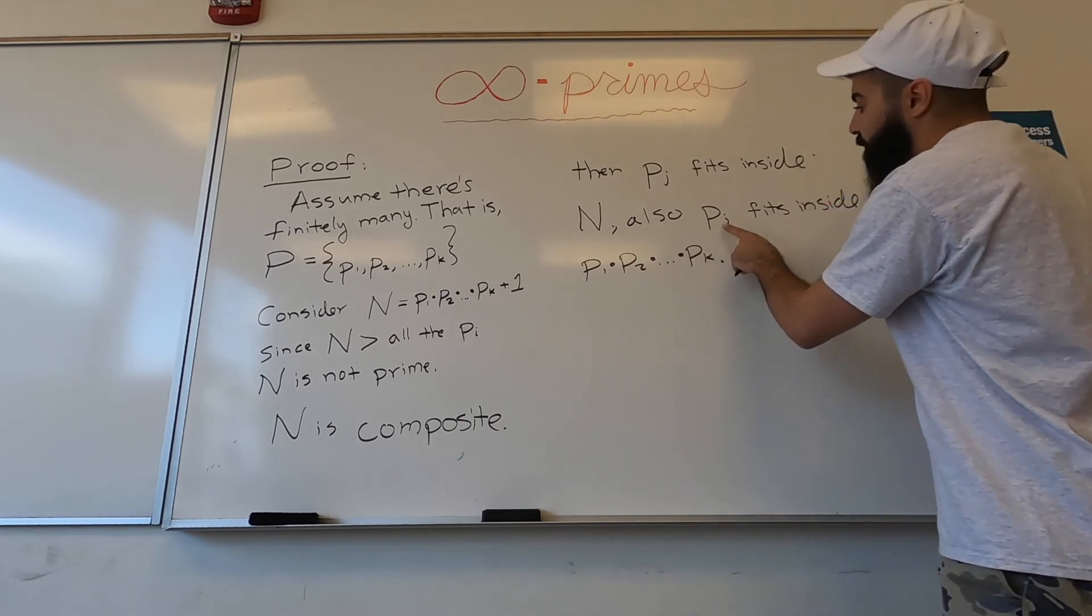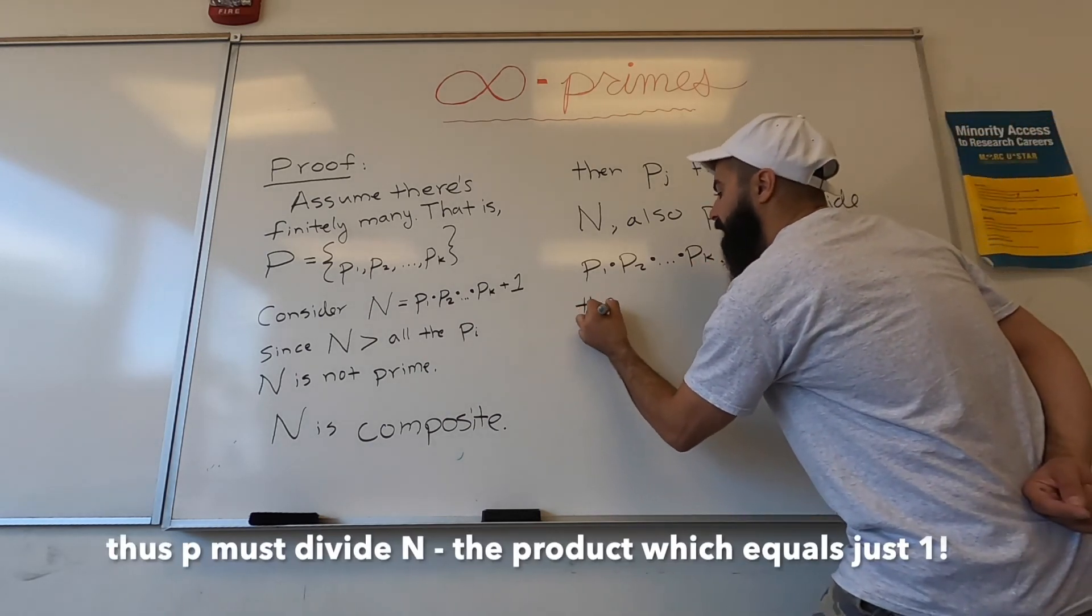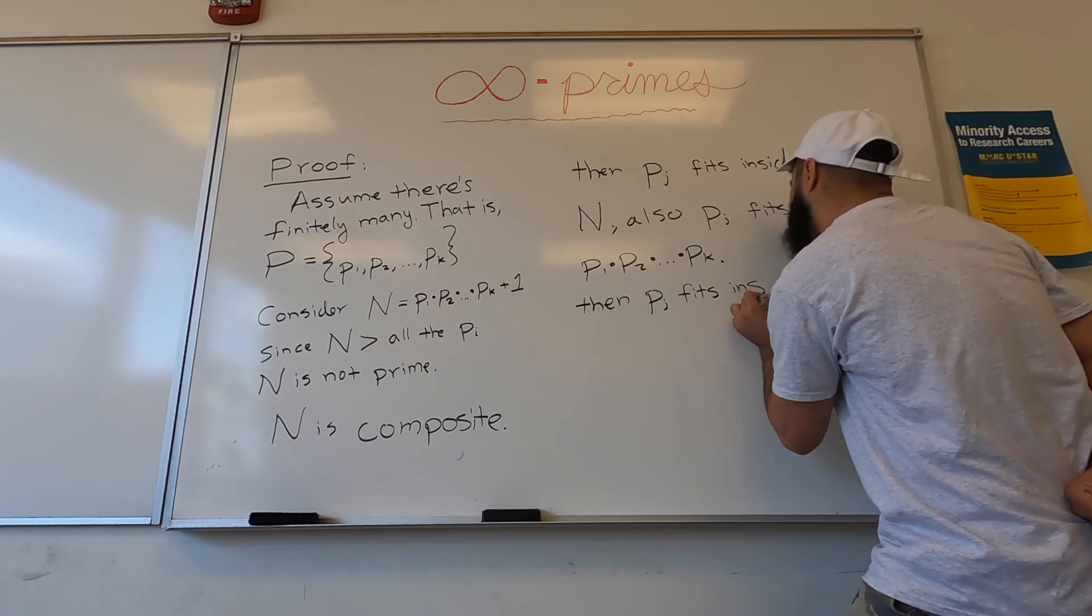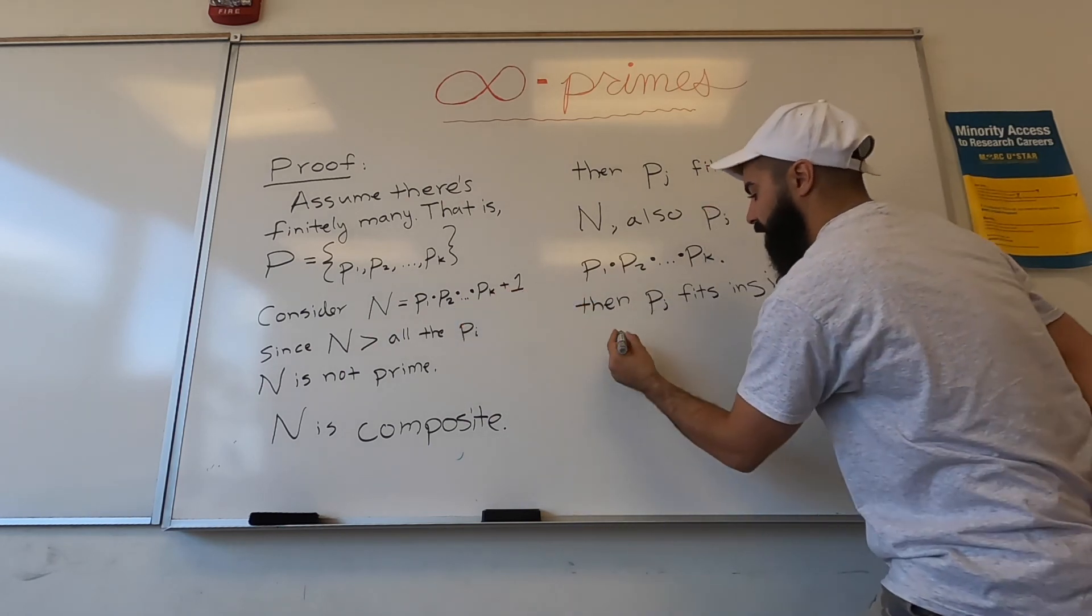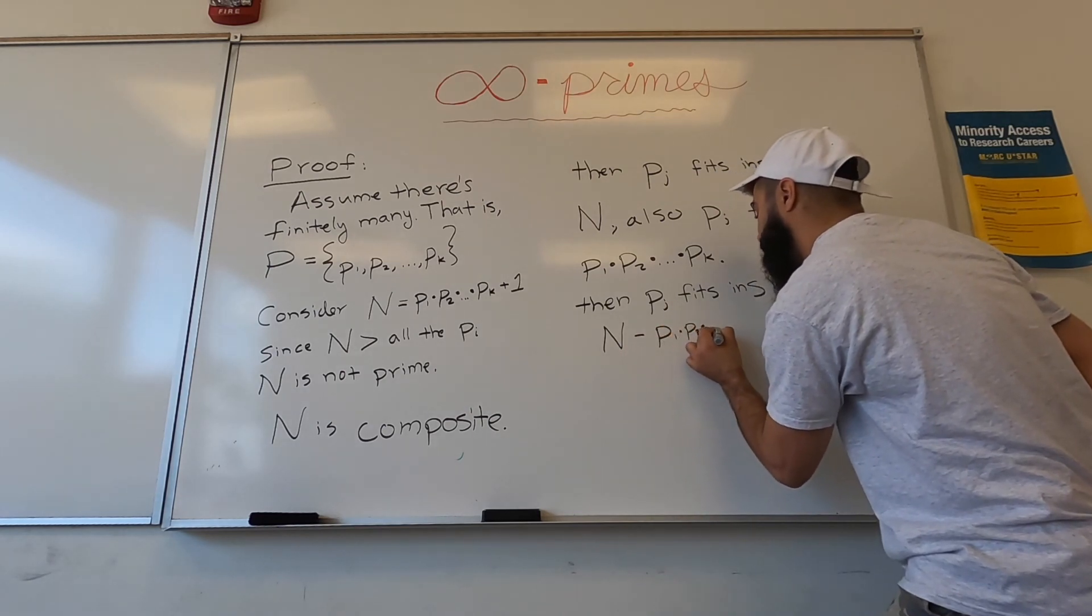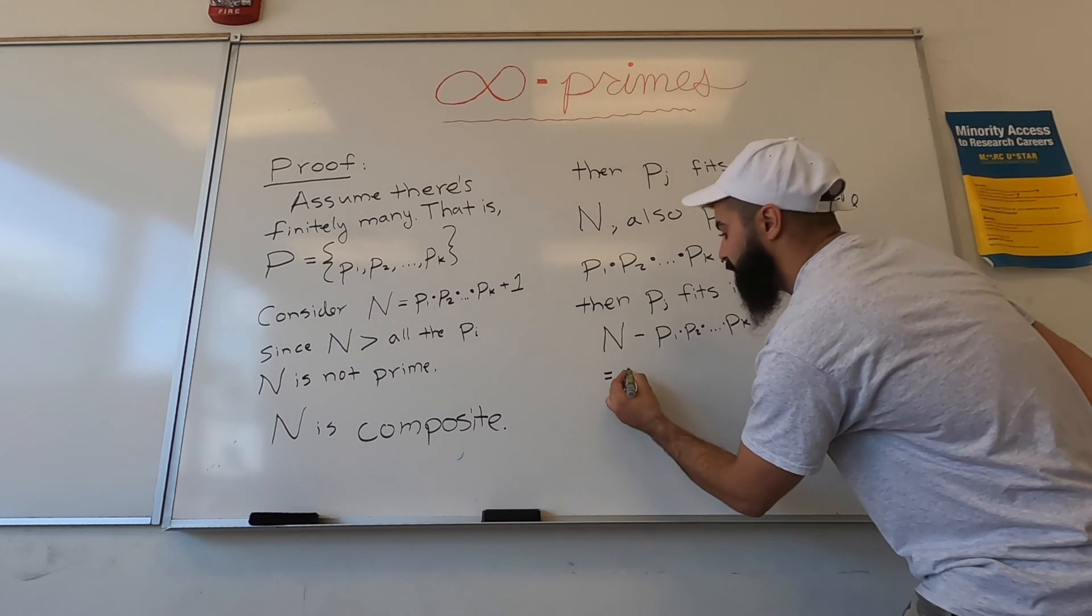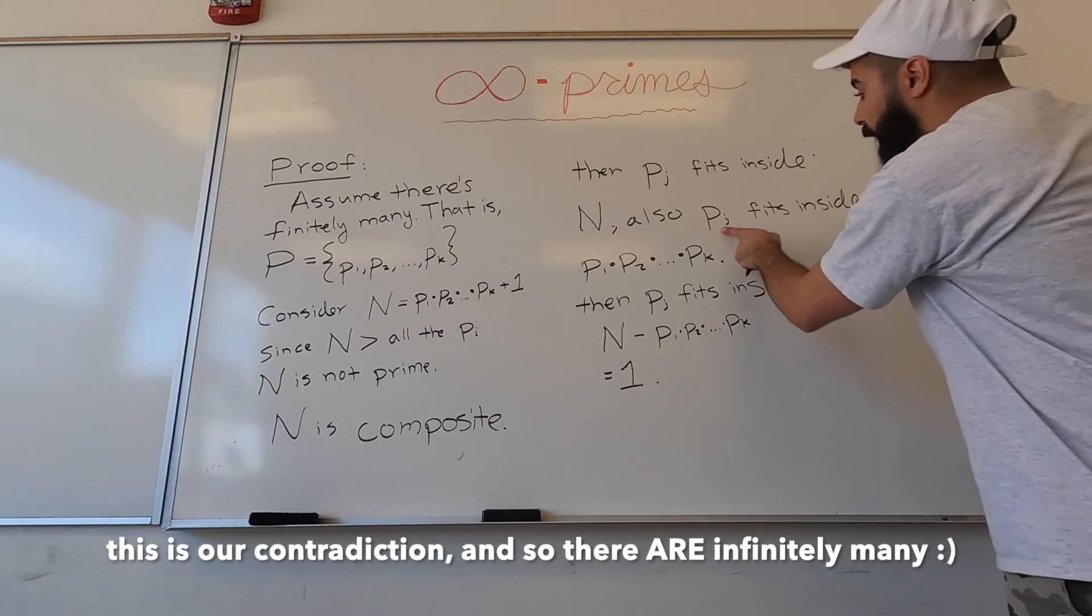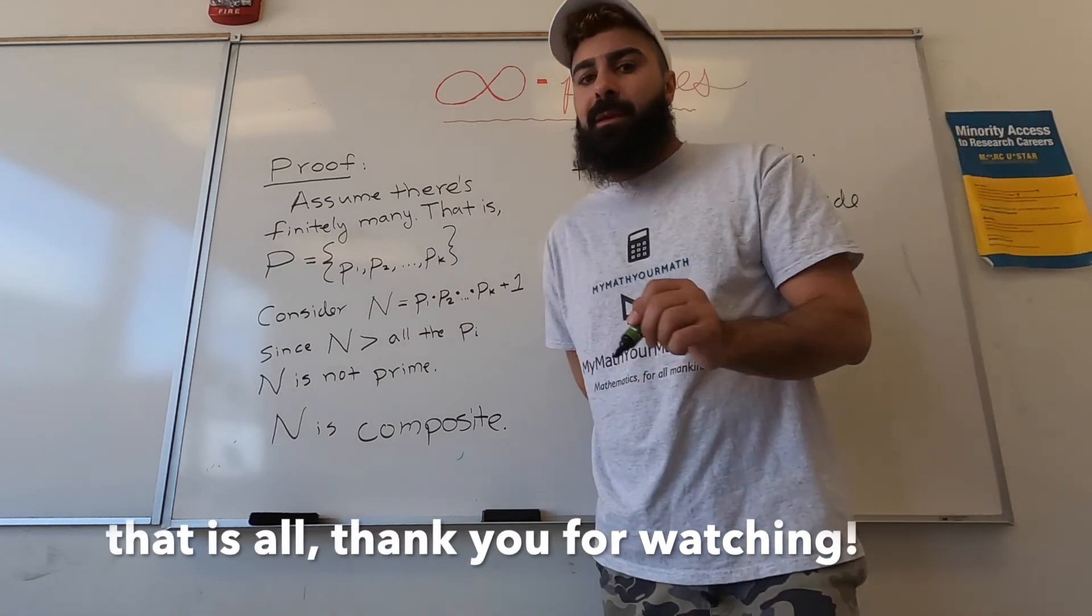And there's a rule in the world of number theory: if something divides two things, it divides their difference. Then pj fits inside N minus the product, which becomes just one. N minus p1 times p2 times pk is actually equal to one because the products cancel. So that means this prime pj fits inside of one. But no prime in the world fits inside of one. That is a contradiction. So there are infinitely many primes in the whole world.